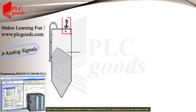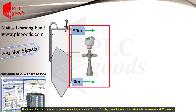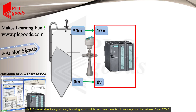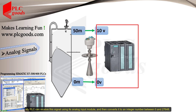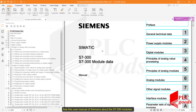Here is a level transmitter to measure the level of a substance such as liquid or soil. This transmitter can be tuned to generate a voltage between 0 and 10 volts where the level of the substance is between 0 and 50 meters. My PLC can receive this signal using its analog input module and then convert it to an integer number between 0 and 27,648. We need to use the user manual of each PLC brand to find these numbers. Let's select chapter 4: Principle of Analog Value Processing.